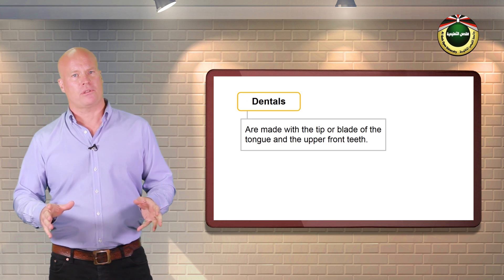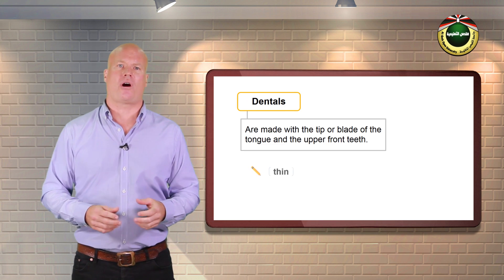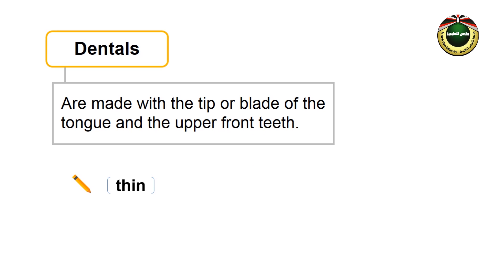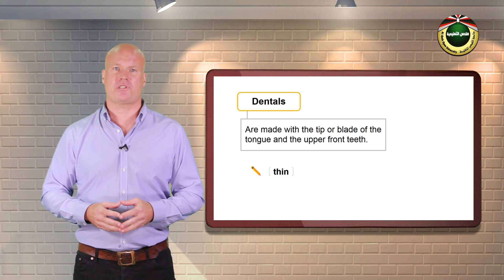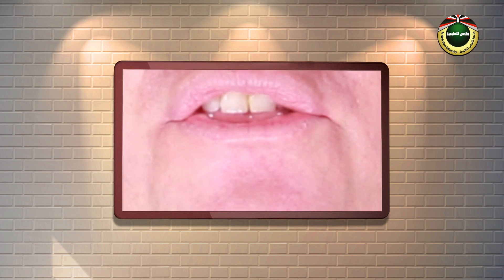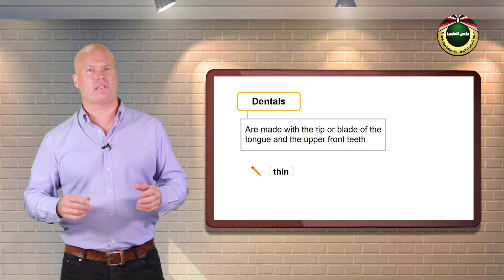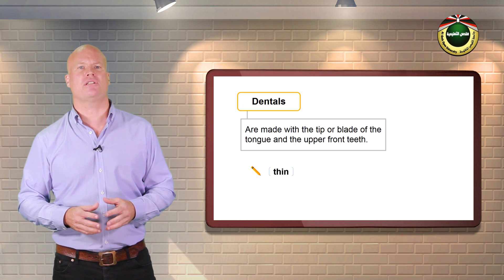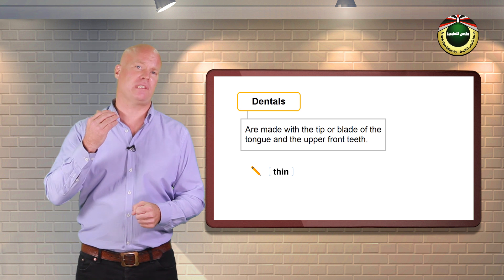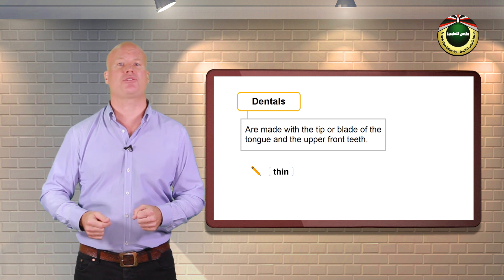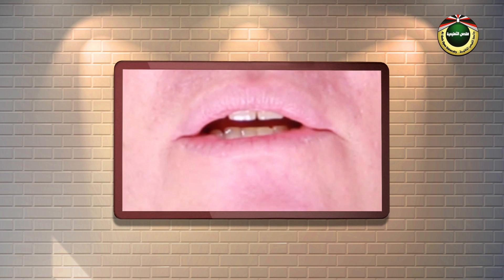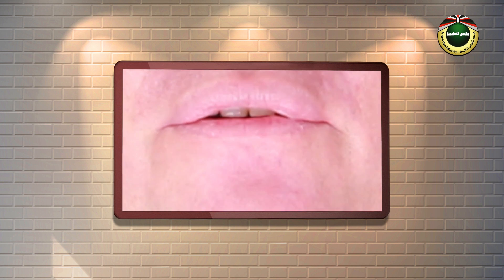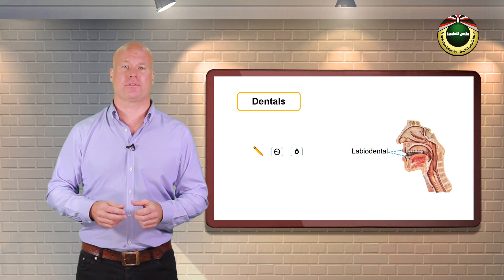Dentals. Dental consonants are made with the tip or blade of the tongue and the upper front teeth. Try to say the first sound in thin, and notice how the tip of the tongue touches the back of your front teeth as illustrated in the diagram. English has th and th as dental sounds.